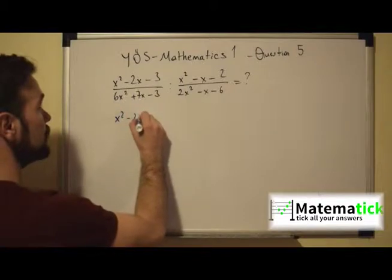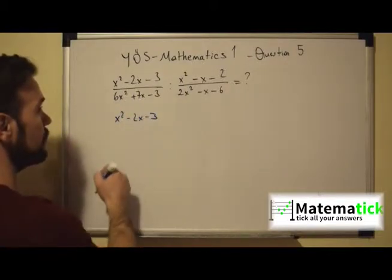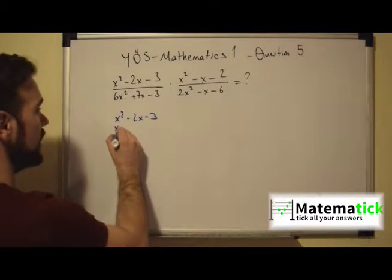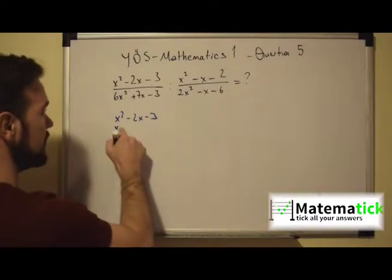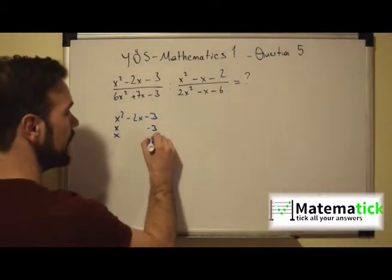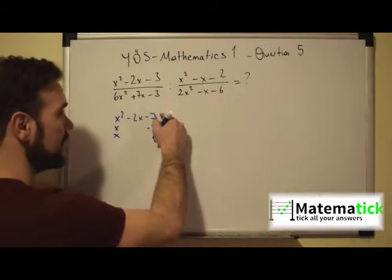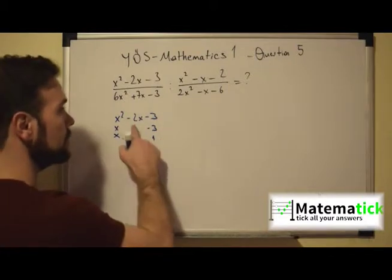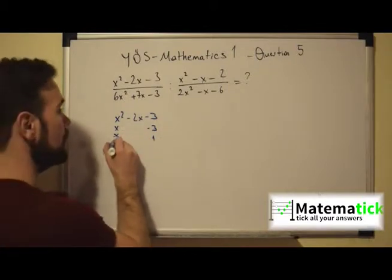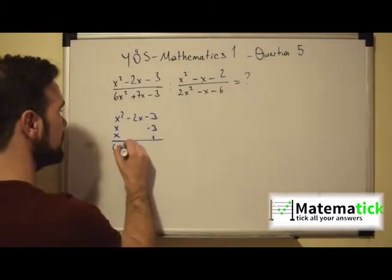We have x² - 2x - 3. What is another way of writing this expression? We have x times x which is x². Then -3 times 1 gives us -3, and -3 plus 1 gives us -2.